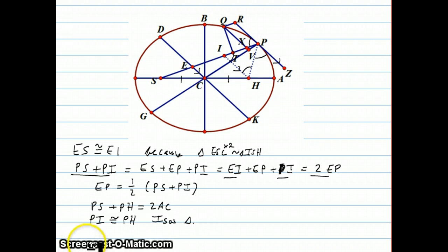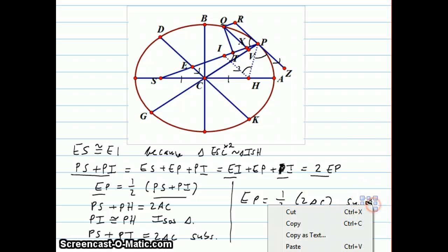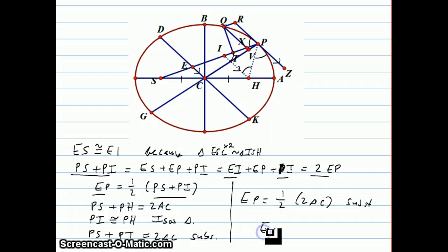We can do some substitution. We already had that PS plus PH equals 2AC, so now I can say PS plus PI equals 2AC by substitution. Now, from before, we have that EP is half of PS plus PI, so now we can replace that PS plus PI with 2AC, so EP is half of 2AC. That's by substitution. And the halves cancel out, and we end up with EP is the same length as AC.